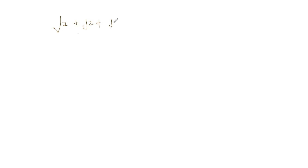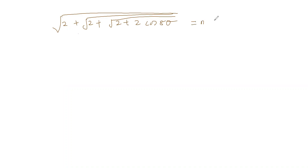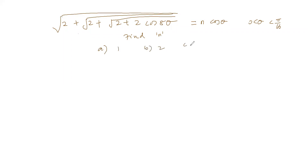Next problem: √(2 + √(2 + √(2 + 2cos 8θ))) equals n cos θ, where θ is between 0 and π/16. Find the value of n, from options 1, 2, 3, or 4. Since 8 times π/16 equals π/2, the innermost angle 8θ is in the acute range.